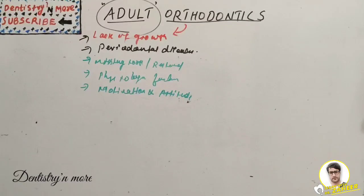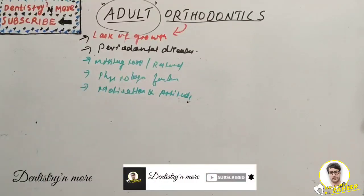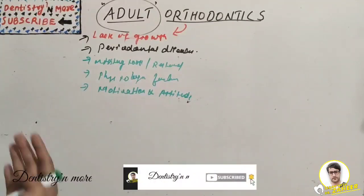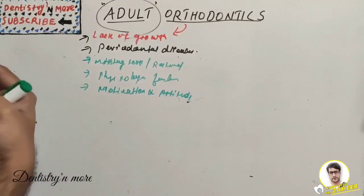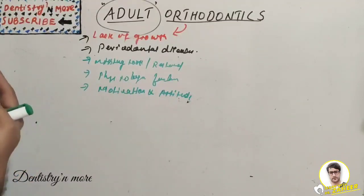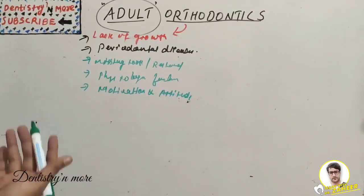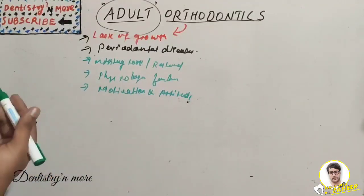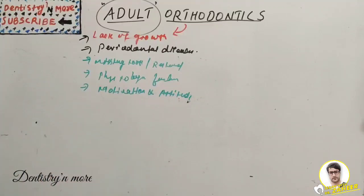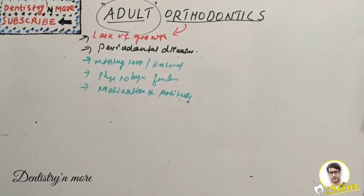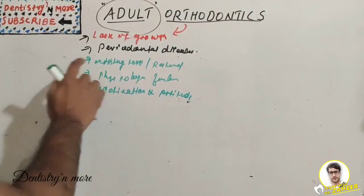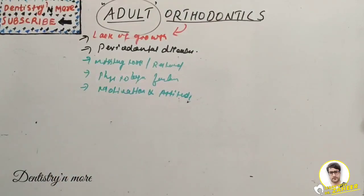Regarding periodontal disease: adult patients are more likely to suffer from periodontal disease. Any active periodontal disease should be treated and stabilized before beginning orthodontic treatment, otherwise it will worsen the existing situation.